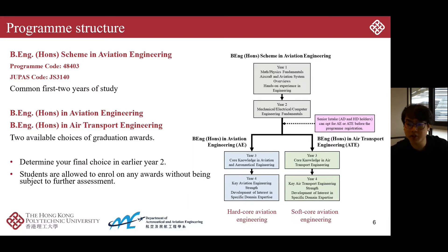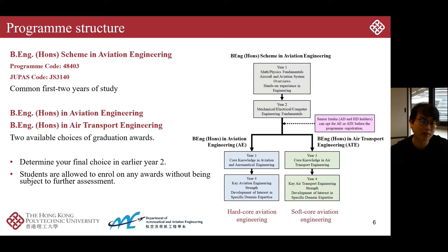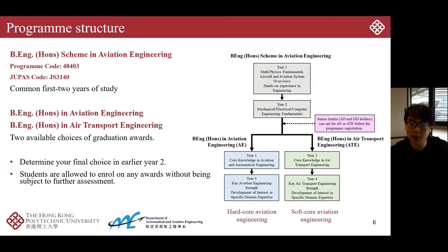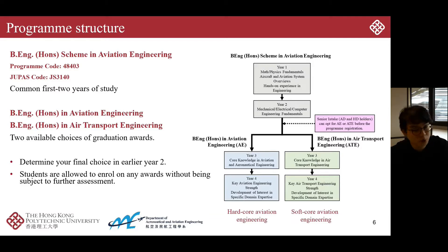In Year 1 of the Aviation Engineering scheme, we will equip you with basic mathematics, physics fundamentals, and basic knowledge of aircraft and aviation systems, plus several hands-on engineering experiences. In Year 2 you will learn fundamentals of mechanical, electrical, and computer engineering, and then you will be able to select your path: hardcore aviation engineering — Bachelor of Engineering in Aviation Engineering, which we call AE.